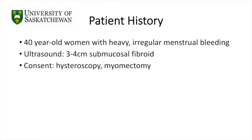The case presented is that of a 40-year-old woman with heavy and irregular menstrual bleeding. Transvaginal ultrasound revealed a 3–4 cm submucosal fibroid. She was consented for hysteroscopy and myomectomy.